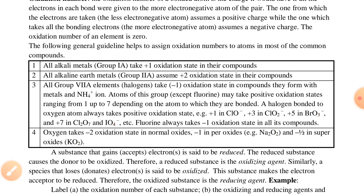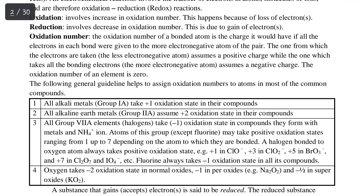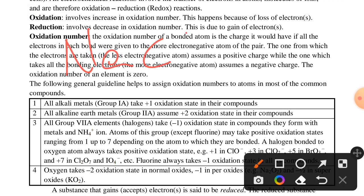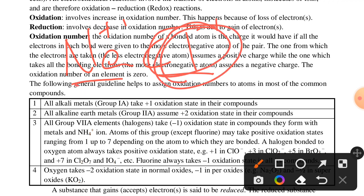All Group 7 elements or halogens take a negative 1 oxidation state in compounds when bonded with metals or ammonium. For example, in sodium chloride, sodium is in Group 1 so it is plus 1, and chlorine is in Group 7 so it is minus 1.